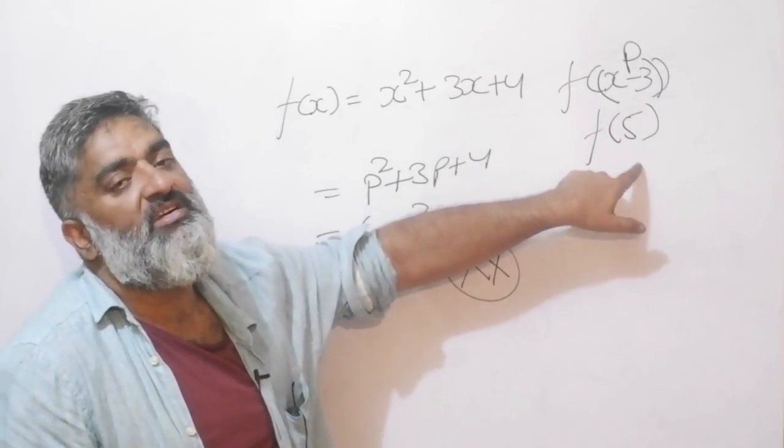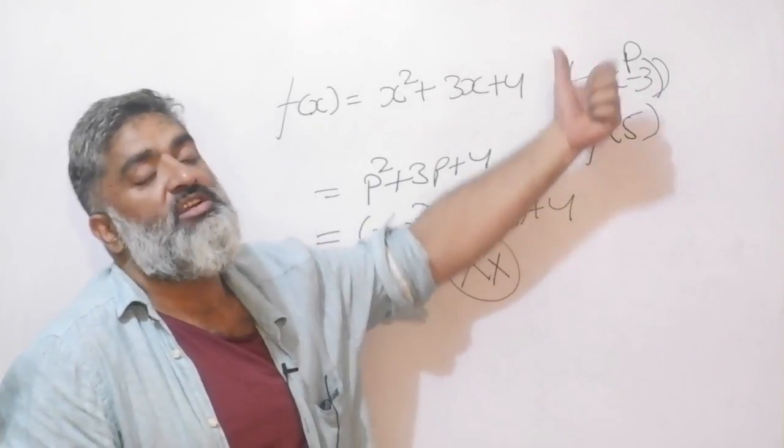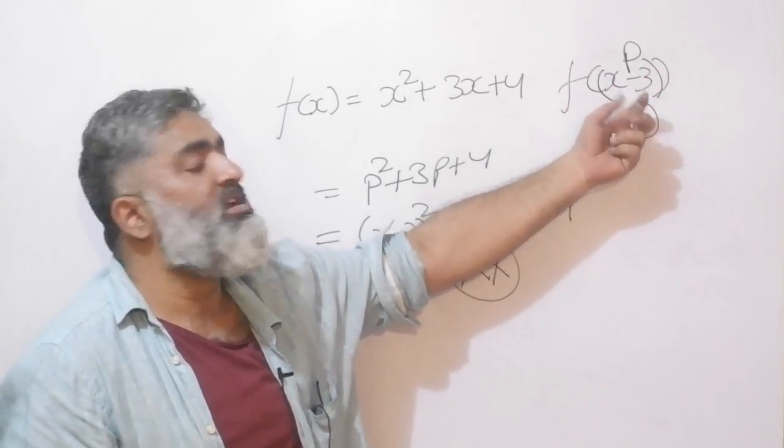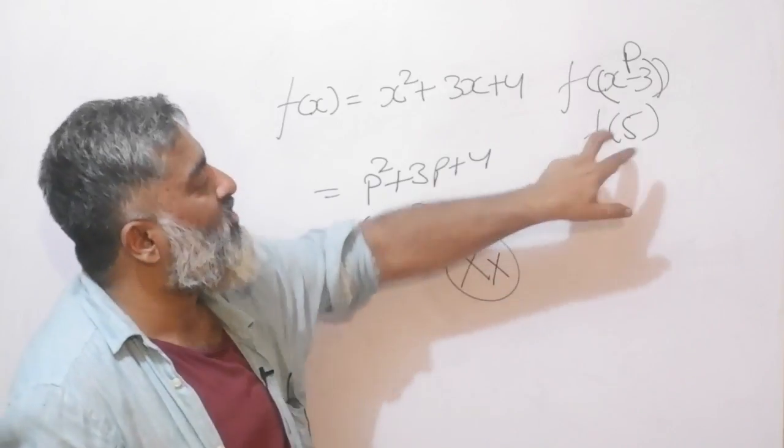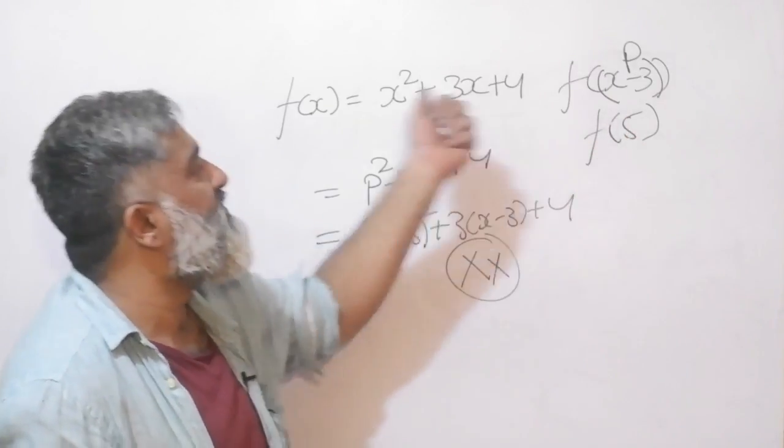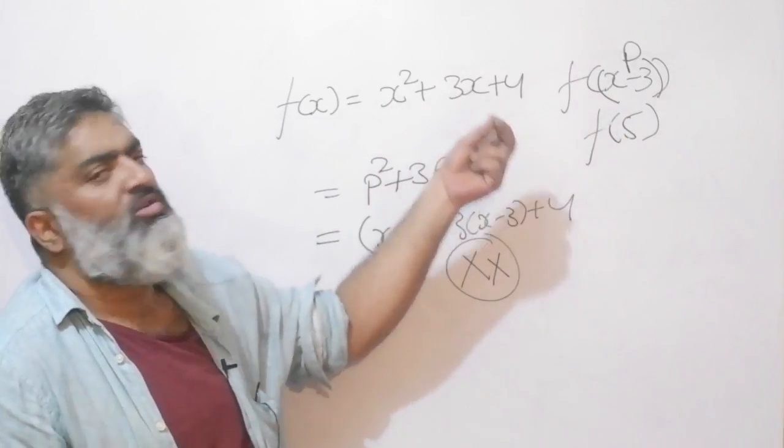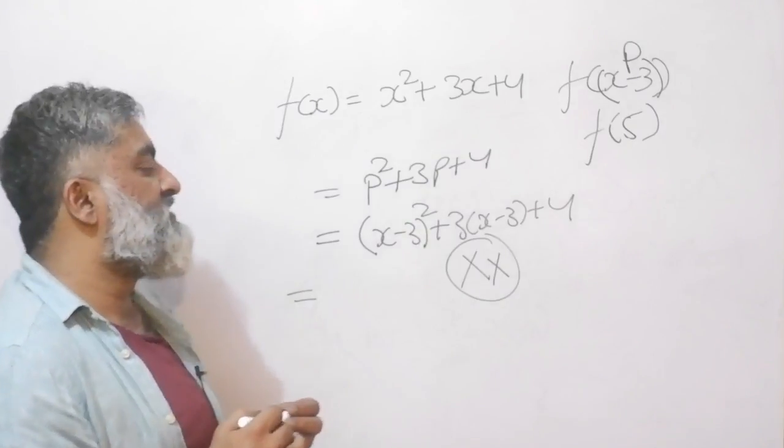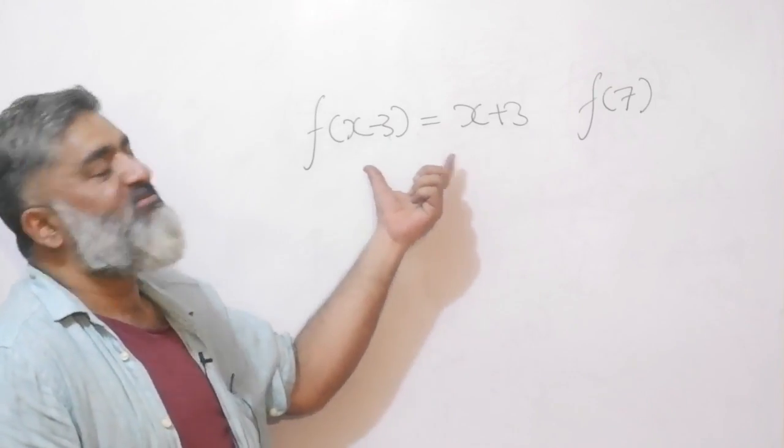The game is clear to me. Whatever is inside the bracket should be put in place of x. Now whether it is big or small, it should not make too much of a difference. Let us try this example out. Another small twist in the story.